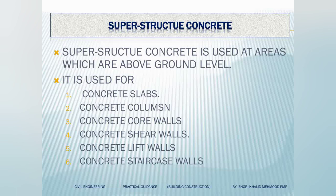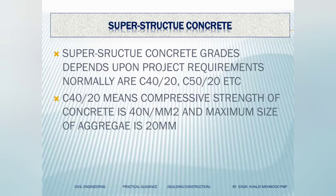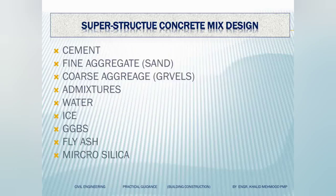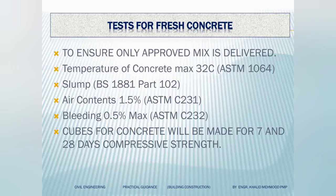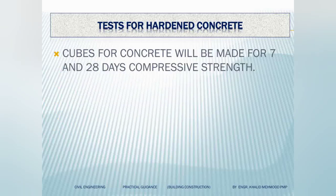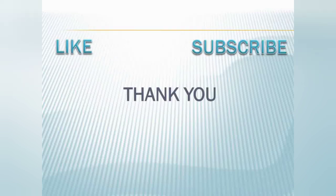Now superstructure concrete — these are areas above the ground level, for example slabs, columns, core walls, and shear walls. Superstructure concrete has different grades like C40/20, C50/20, or C60/20, depending on project requirements. Ingredients are the same: cement, fine aggregates, coarse aggregate, admixture, GGBS, fly ash, and micro silica. This is a copy of the mix design where you can see all the different materials, their quantities, and their percentages. For testing, the same fresh concrete tests are conducted. For hardened concrete in superstructure, we use only the 7-day and 28-day compressive strength tests.